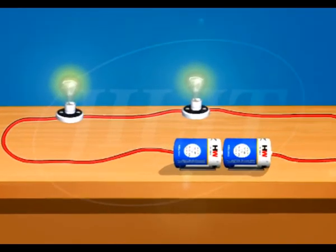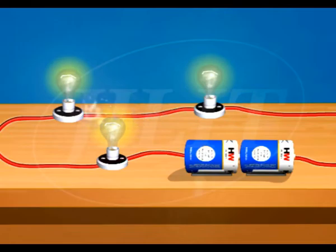More the number of bulbs in the same path, more is the resistance. Thus, the current in the circuit goes down.